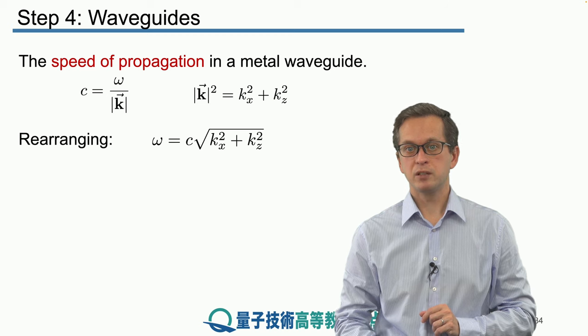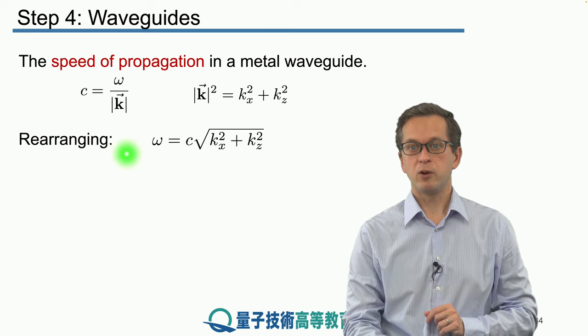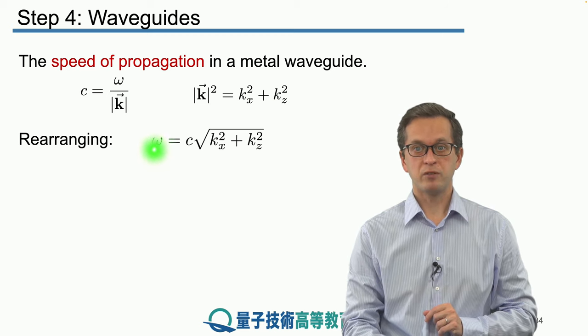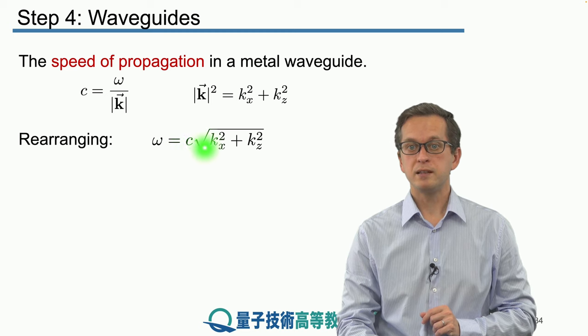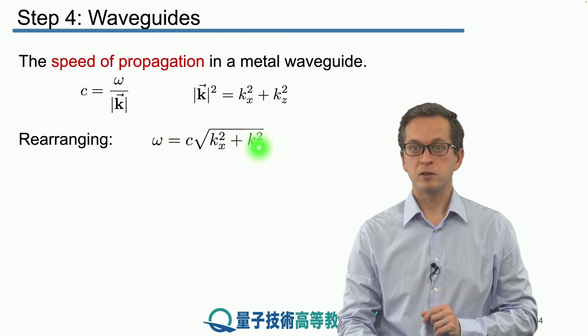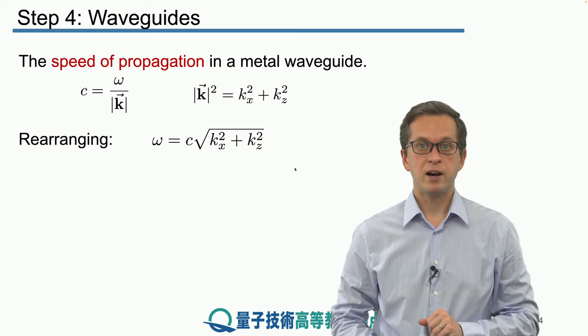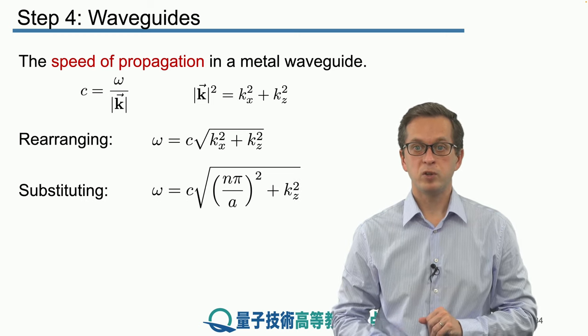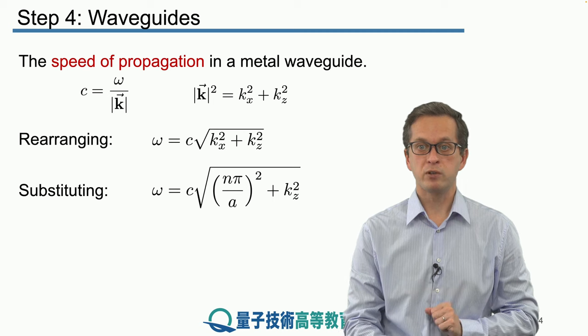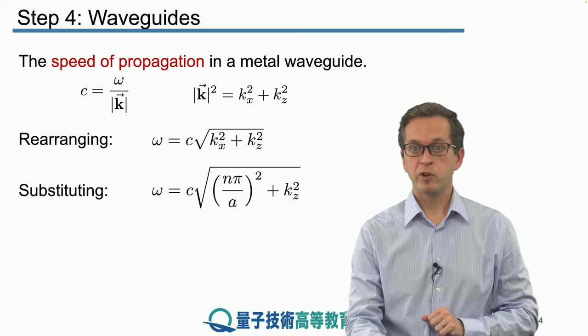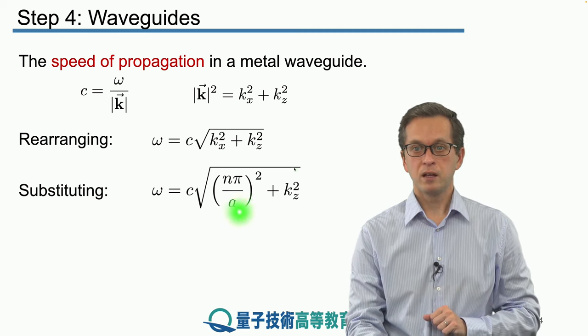So, we can rearrange our expression and obtain the following. Omega, the angular frequency of the wave, must be c times the modulus of our k vector. And we have seen that kx is not just any value, and in fact is constrained to be an integer multiple of pi over 2. So, substituting that in, we obtain the following.